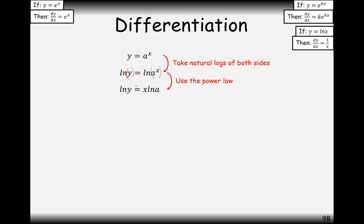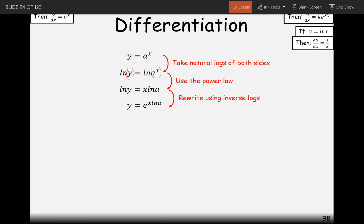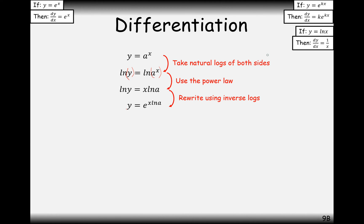All I've done is used the log rule to bring the power out as a scale factor multiplier. Now, we do the inverse of the natural log — we e both sides. e to the ln y cancels to just y, so we now have y equals e to the x ln a.